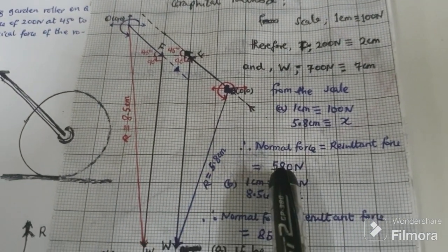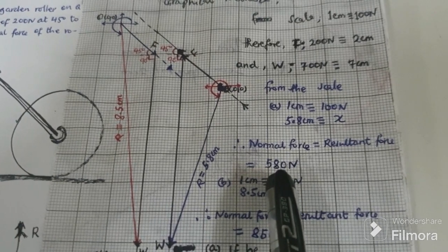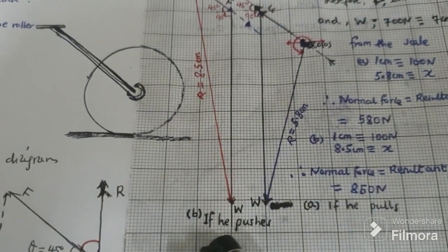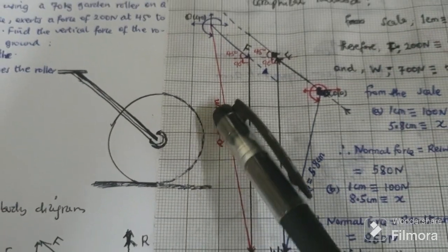From the scale, our answer is equal to 580 newtons. Part B is if he pushes the garden roller.